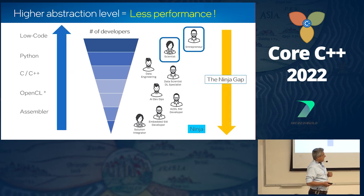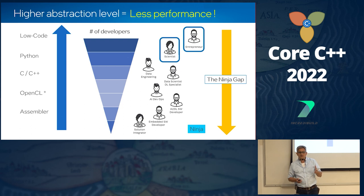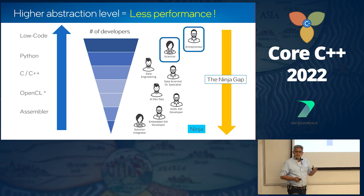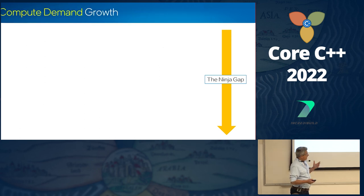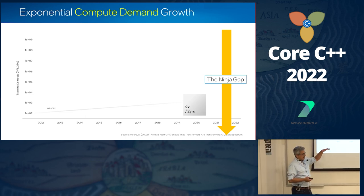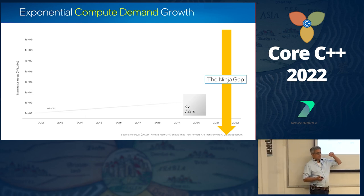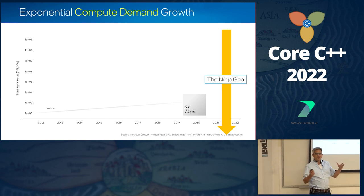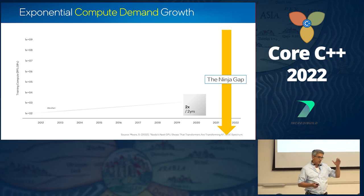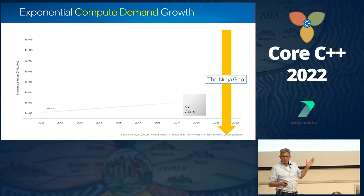The problem is that many times going up the abstraction level means losing performance. The ninja gap is just getting bigger and bigger. For many years we had a guiding light — a metric for accelerating performance called Moore's Law. Gordon Moore, one of the Intel founders, predicted that the number of transistors would double every almost two years.